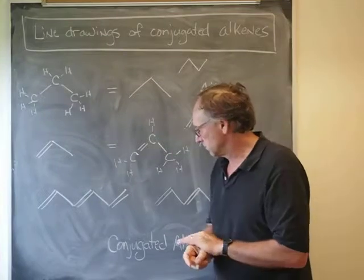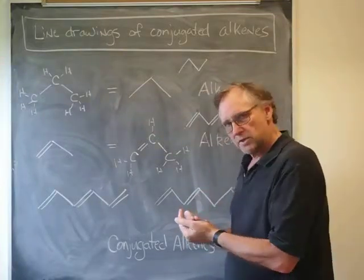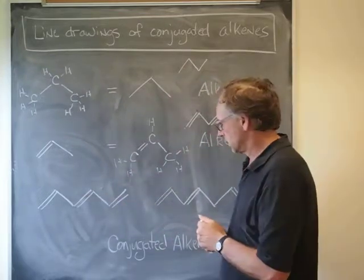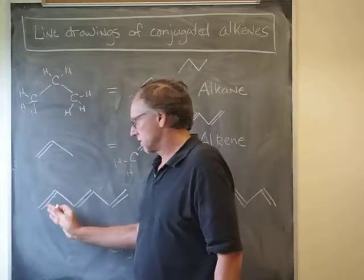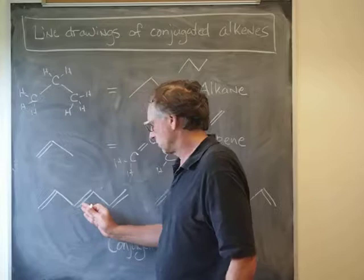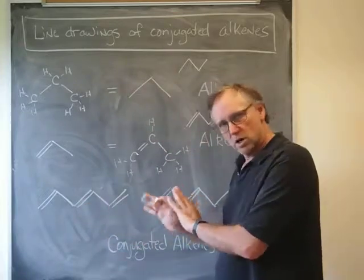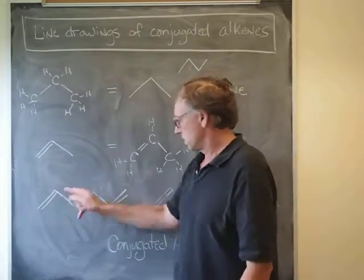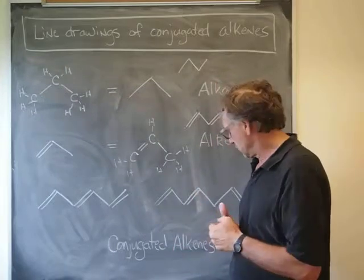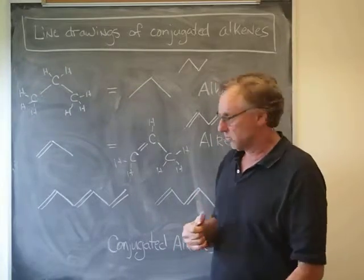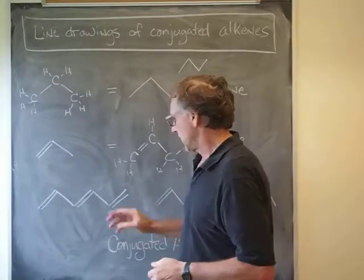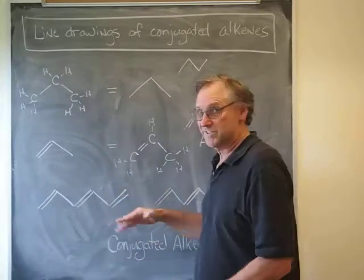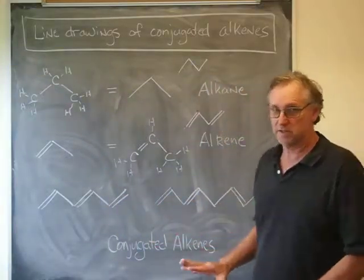The last idea I want to talk about here is whenever you have multiple carbon-carbon double bonds, and when they are in the sequence double bond, single bond, double bond, and so on, that is called a conjugated alkene. In this case, I can see that there are three double bonds that are conjugated. Now the rule is, in order to be called a conjugated set, you have to have precisely this kind of arrangement. If there's an extra single bond in between, then they are not conjugated with each other.